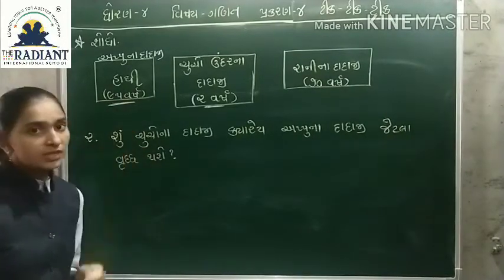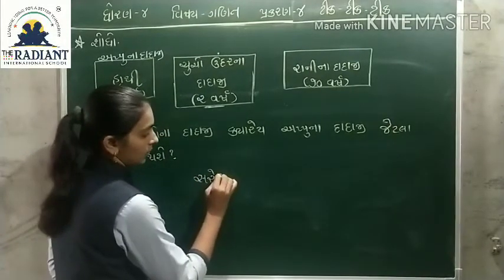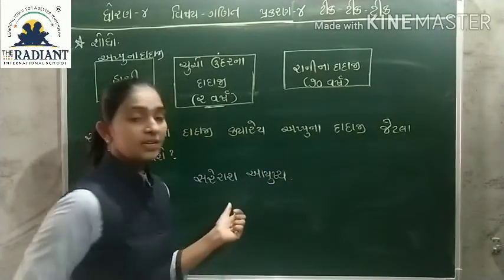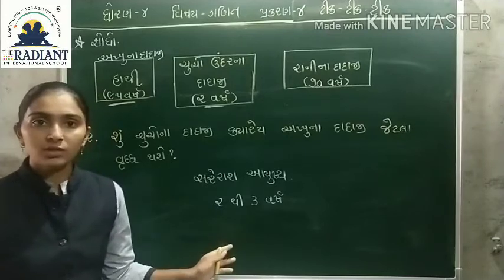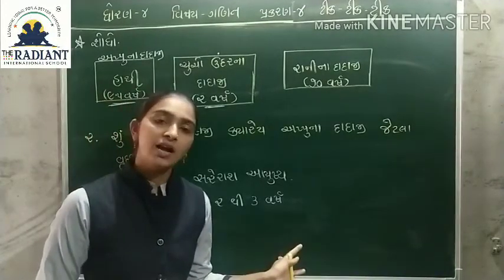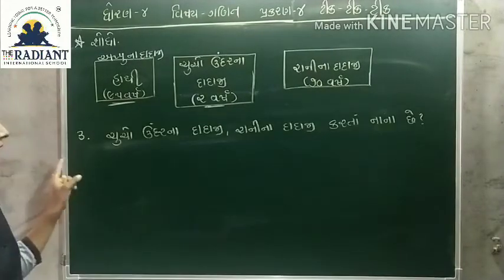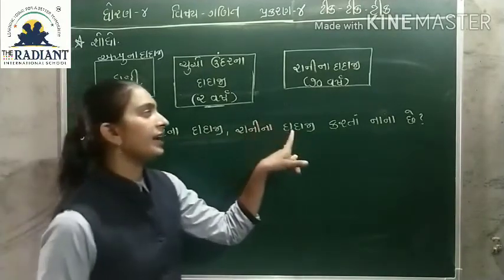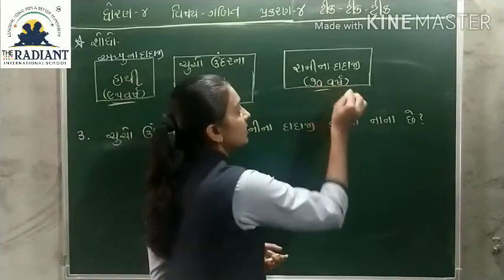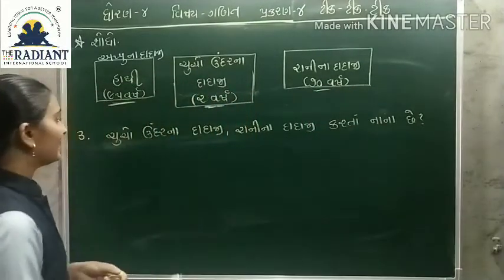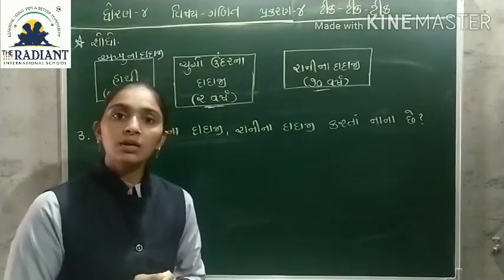ચુચોના ડાડાજી પંચાણું વર્ષ નઈ ઠસે. કેમ નઈ ઠસે? કારણ કે ઉંદરોનું સરેરાશ જે આયુ છે તે સરેરાશ એટલું નહિ. અપ્પુના ડાડાજી જેટલા વૃદ્ધ ઉંદર ન થઈ શકે. ત્રીજો સવાલ: ચુચો ઉંદરના ડાડાજી રાણીના ડાડાજી કરતા કેટલા નાણા છે? એટલે આપણે બંને વચ્ચે કેટલા વર્ષનો તફાવત છે તે સોધીશું.